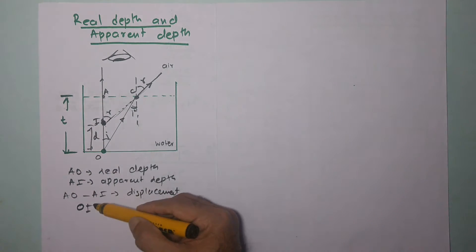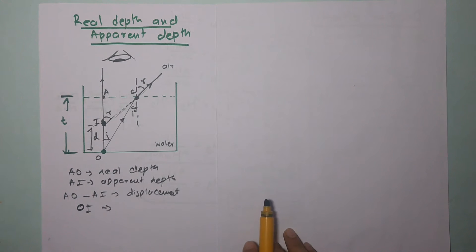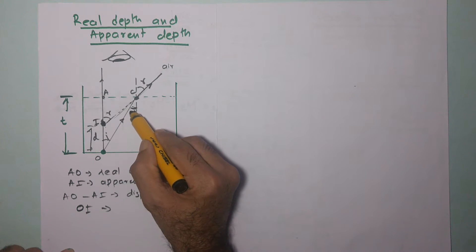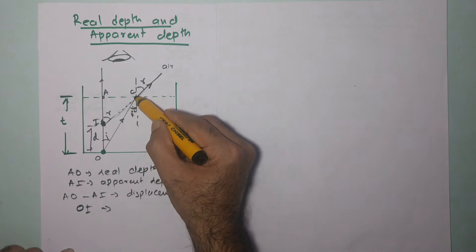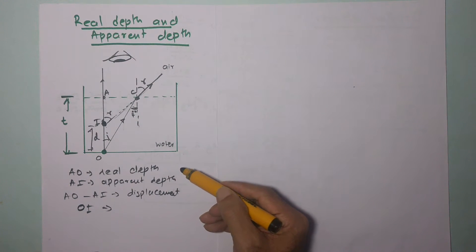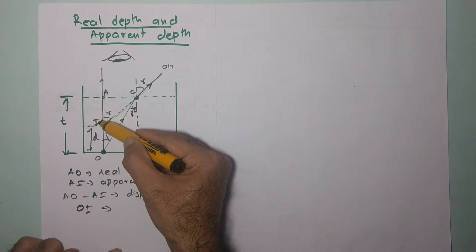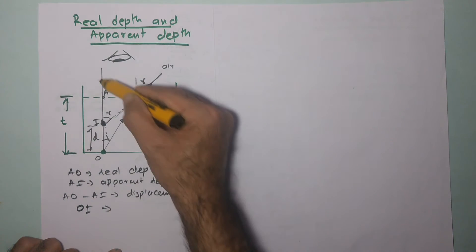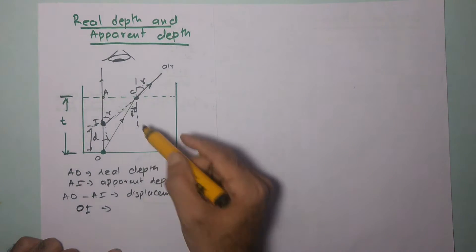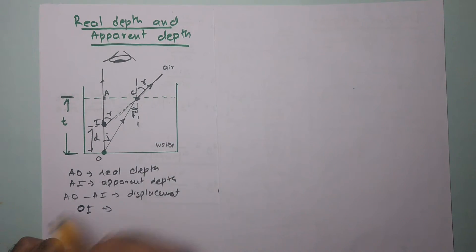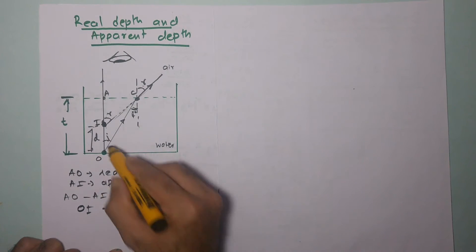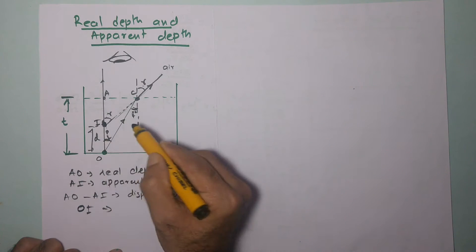The image gets raised by a distance t, and our objective is to find this distance. Looking at the various angles, this is the angle of incidence i and this is the angle of refraction r. From geometry, using two parallel lines and a transversal: corresponding angles give us angle r, and alternate angles give us angle i. So this angle is angle i and this angle is angle r.